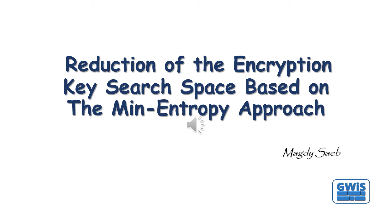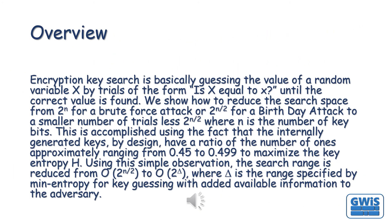Reduction of the Encryption Key Search Space Based on the Min Entropy Approach. Encryption key search is basically guessing the value of a random variable K0 by trials of the form: is K0 equal to X, until the correct value is found. We show how to reduce the search space from 2^N for a brute force attack, or 2^(N/2) for a birthday attack, to a smaller number of trials less than 2^(N/2), where N is the number of key bits.